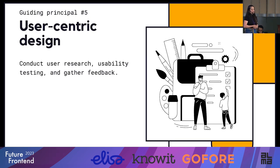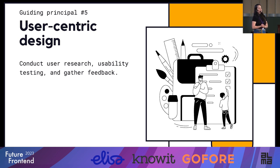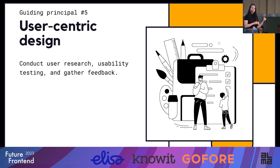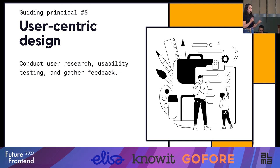Guiding principle number five: user-centric design. Conduct user research, usability tests, and gather feedback — that's at the base of any product design. You want to know what the user is doing with your product. If you've set up your design system with components that differ a little from the platform and you found enough reasons to do so, put it in the hands of the user. See if they actually interact with that component as you expected. I would encourage developers as well — when implementing something from your designer, just put it in the hands of a couple of users and see if they click where they should.